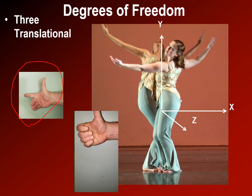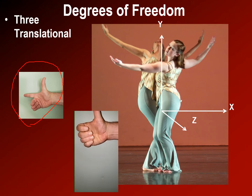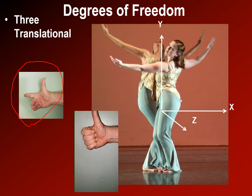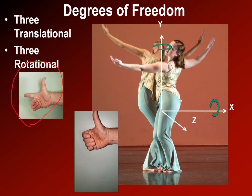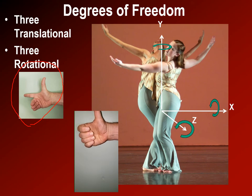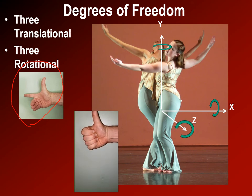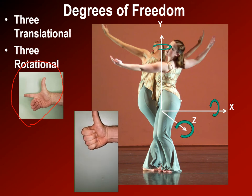By curling your fingers around your thumb, your thumb represents the axis and your fingers indicate the direction of positive rotation — around the x-axis, the y-axis, and the z-axis. If you do the same thing with your left hand, you are describing the negative direction of rotation.